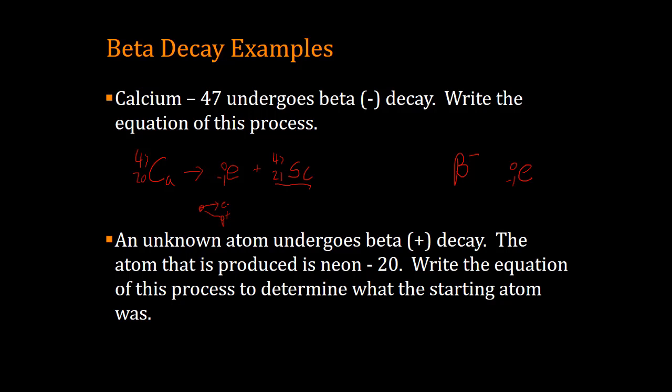An unknown atom undergoes beta plus decay. The atom that is produced is neon 20. So we have something, changes, it's a beta plus, so we write E, zero, one, plus, and it ends up as neon 20, so we've got NE, mass number 20, we find neon on the periodic table, it is element number 10, and then we just add 20 plus 0 is 20, 10 plus 1 is 11, and so the eleventh element on the table is sodium, so sodium is actually what underwent beta plus decay.